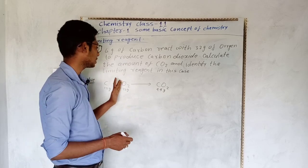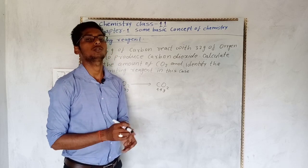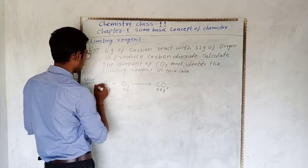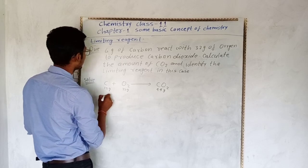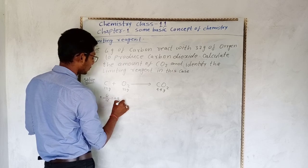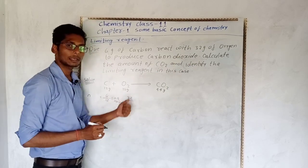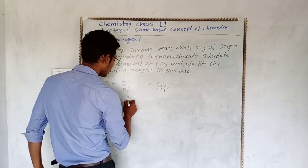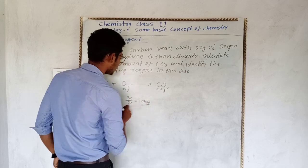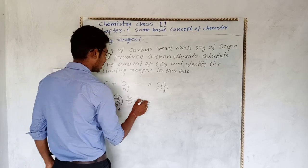Method 1 से limiting reagent find करते हैं: given mass को molar mass से divide करो। Carbon: 6/12 = 0.5 moles। Oxygen: 32/32 = 1 mole। जो value less आएगा वह limiting reagent होगा। 0.5 moles < 1 mole, इसलिए carbon limiting reagent है और oxygen excess reagent है।